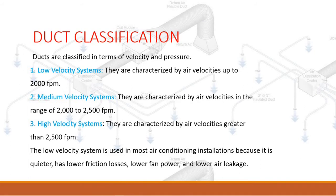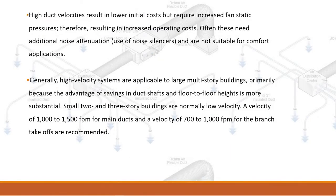The low velocity system is used in most air conditioning installations because it is quieter, has lower friction losses, lower fan power, and lower air leakage. High duct velocities result in lower initial costs but require increased fan static pressures, therefore resulting in increased operating costs.